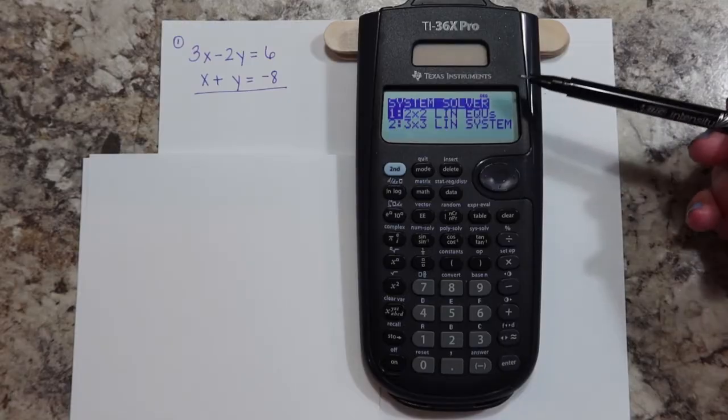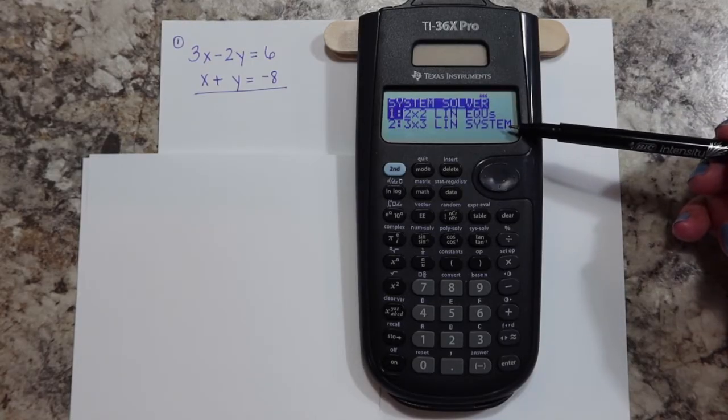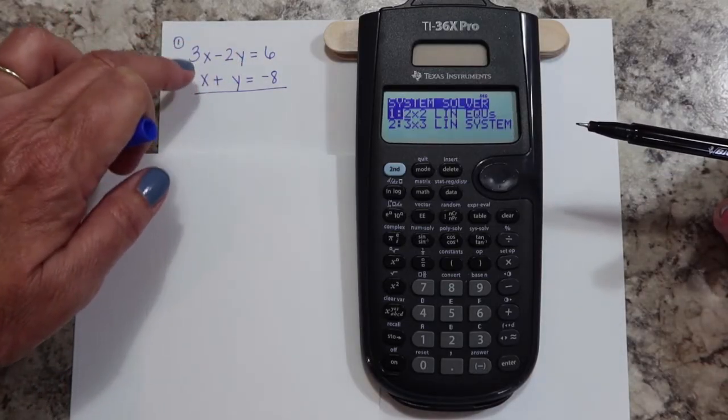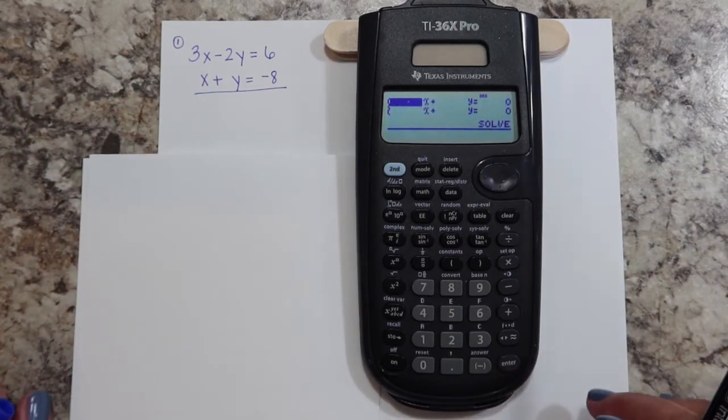This pulls up a menu. Number one is a two by two, number two is a three by three. We're going to start with the two by two since this is what we have: two variables and two equations. Just hit enter or you can hit the number one.